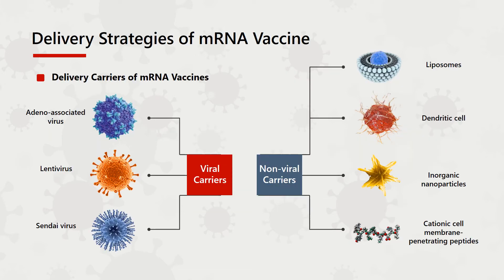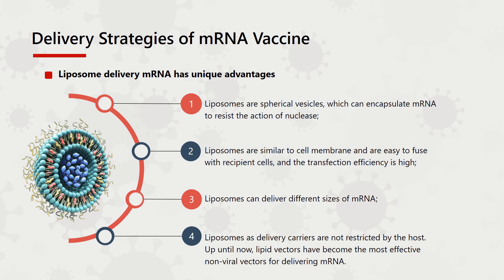Researchers have studied a variety of in vivo delivery methods for mRNA. We focus on the technologies for delivering mRNA vaccines in carrier-mediated, naked, and DC-based forms. mRNA vaccine delivery carriers mainly include viral carriers and non-viral carriers. Although viral carriers based on lentivirus, adeno-associated virus, and sendivirus can deliver nucleic acid, they may be limited by the immune response caused by the carriers. Non-viral carriers mainly include liposomes, dendritic cells, inorganic nanoparticles, cationic cell membrane-penetrating peptides, and others. Among them, liposome delivery of mRNA has unique advantages.